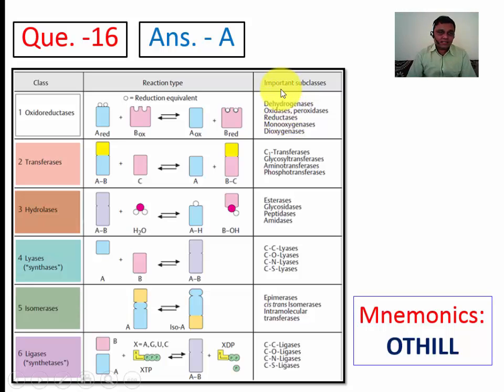The second is transferase, that means it transfers one group from one molecule to another molecule. So here you can see the A and B group are there, C is alone. After reaction you will find A is alone, B and C are joined. So it is done by transferase. It can be glycosyl transferase, aminotransferase or transaminase, phosphotransferase. So any type of group transfer or molecular group transfer is done by transferase.